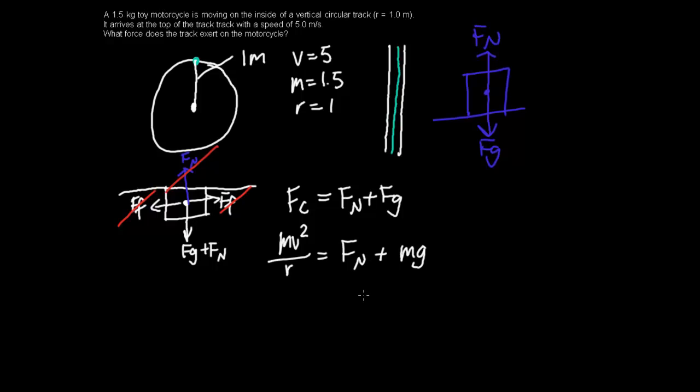All right, so what happens is we don't know our normal force, so all we can do is just find it. So Mv squared over R minus Mg equals our normal force.